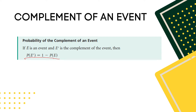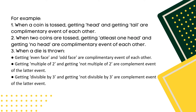For example, when a coin is tossed, getting a head and getting a tail are complementary events of each other. When a die is thrown, getting an even face and an odd face are complementary events of each other. Getting a multiple of 2 and getting not a multiple of 2 are complementary events. Getting divisible by 3 and getting not divisible by 3 are also complementary events.